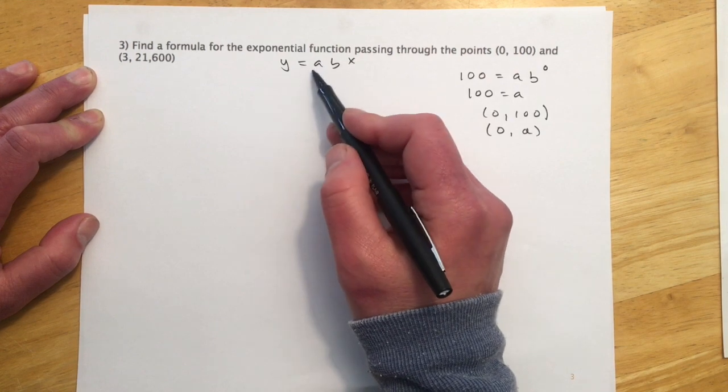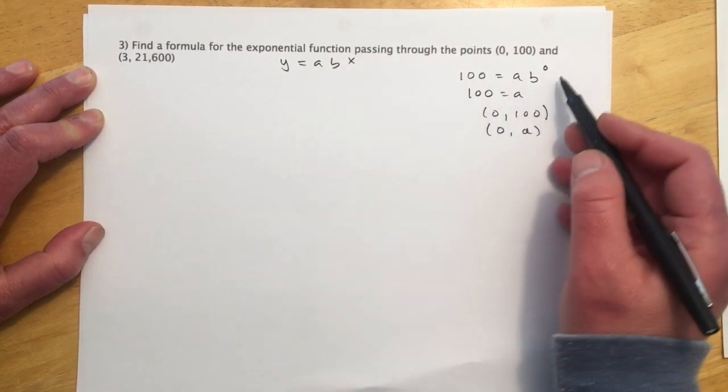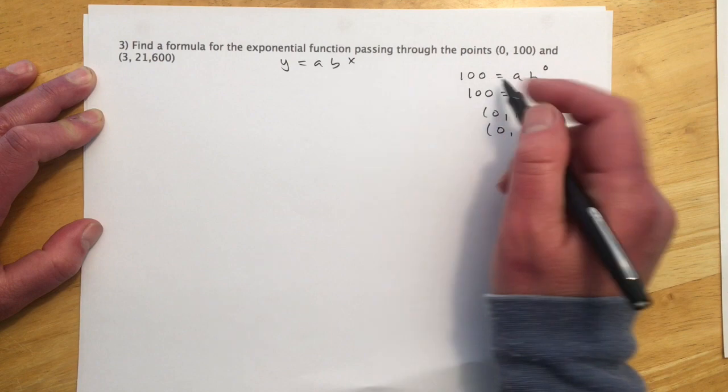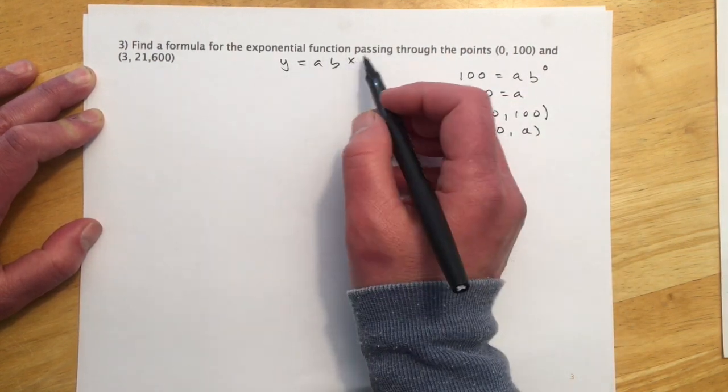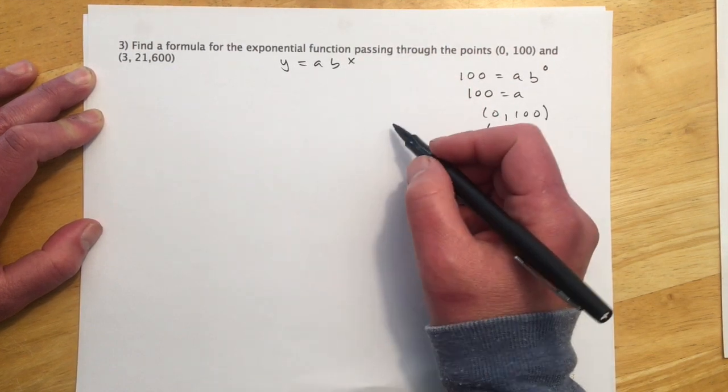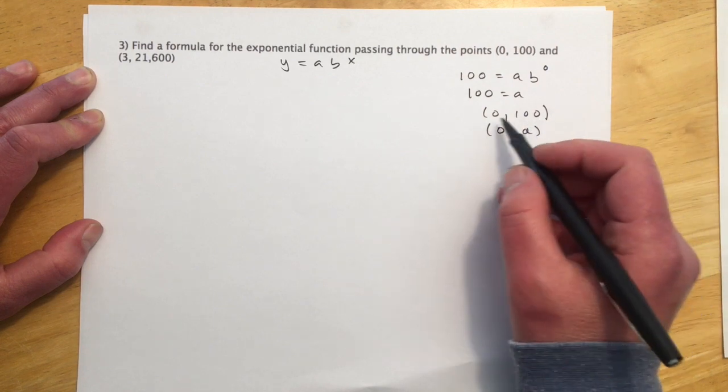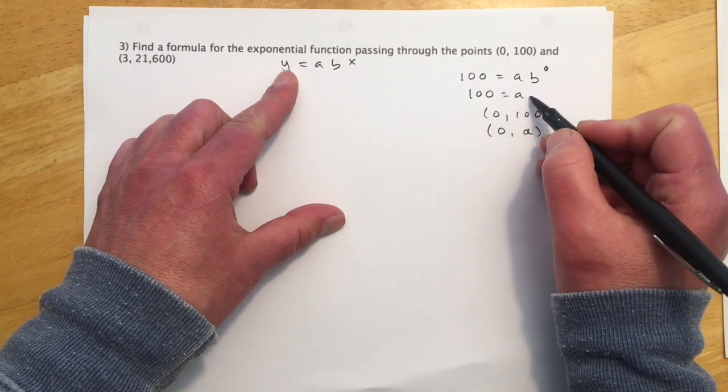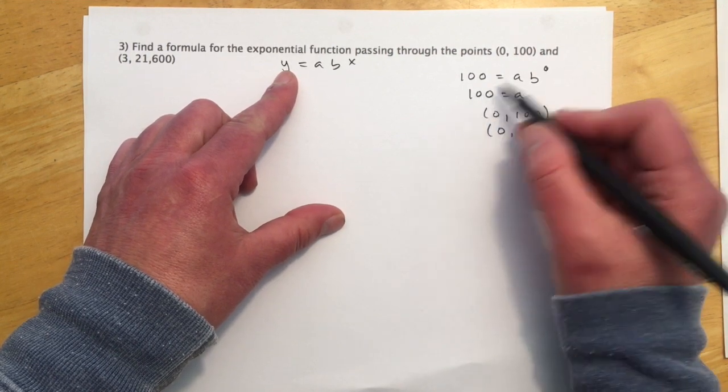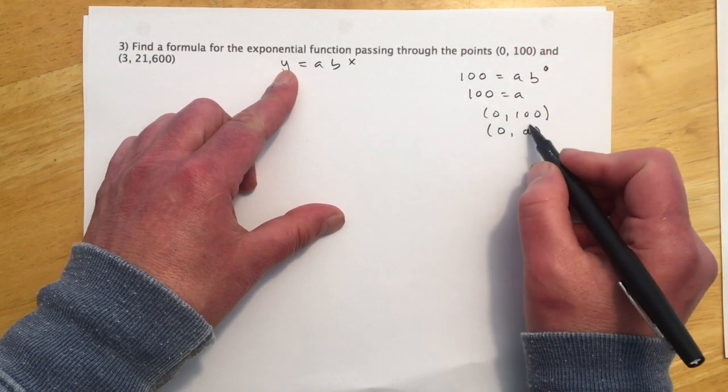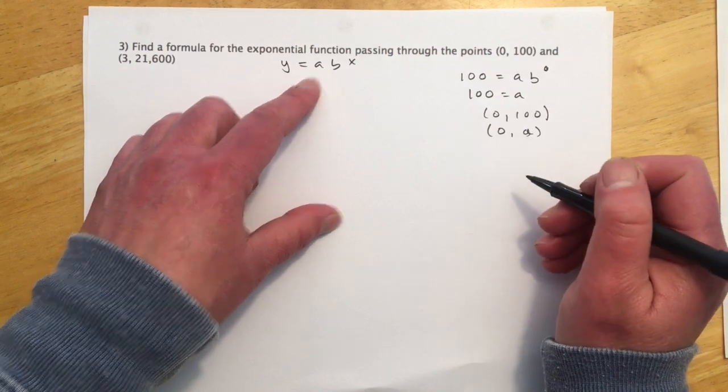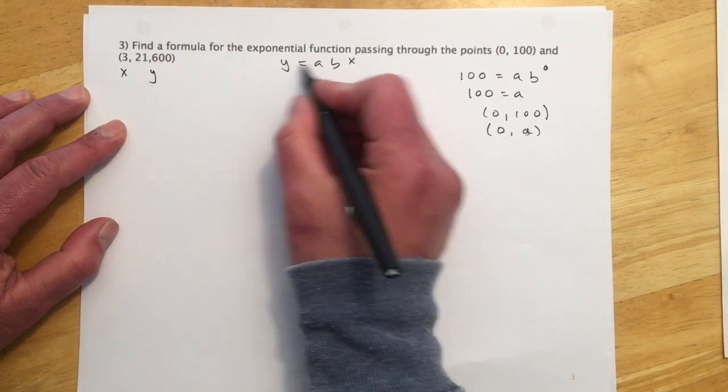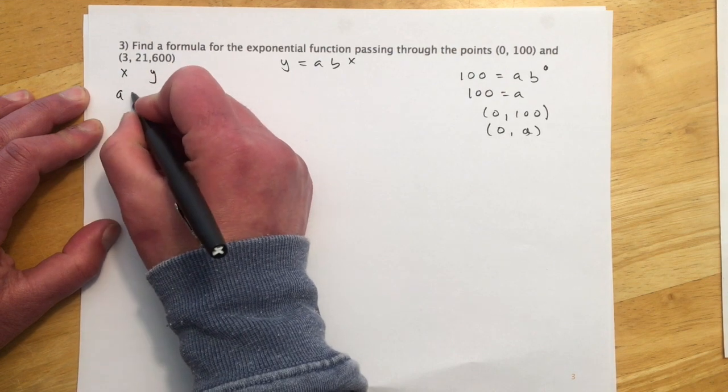So for this next problem, we're going to use y = ab^x. And I set it up over here to show some scratch work on this (0,100) point. So what we're going to do is we need to find A and B because x and y are our input and output variables. A and B are our constants. But over here, what they gave us is actually A. So if I let x=0 and then y is 100, b^0, that just equals 1. So I'm left with the A is 100. So essentially, any time they give you something like this, (0,100), they're giving you 0 and one of the variables that you needed to solve for, which makes this problem easier than the next one.